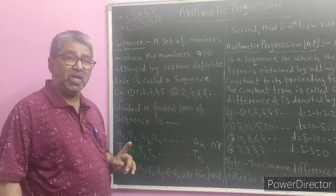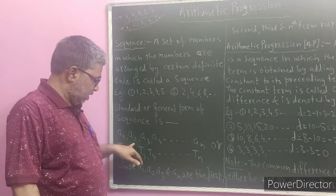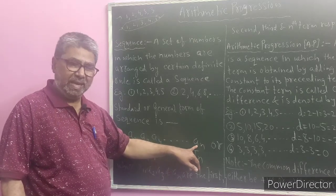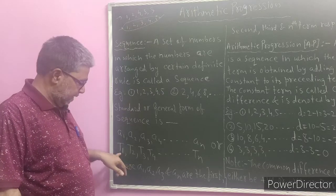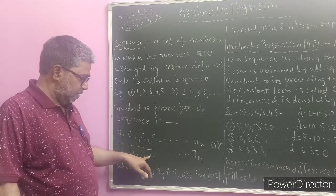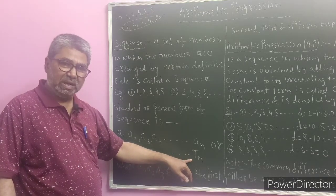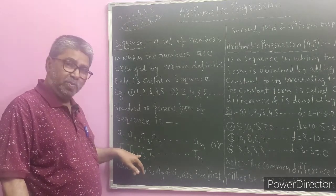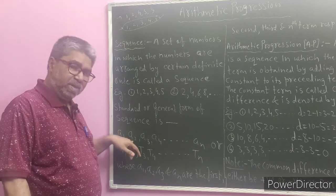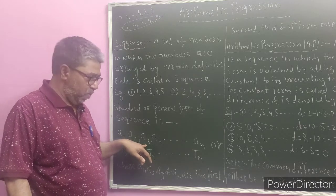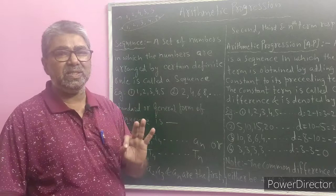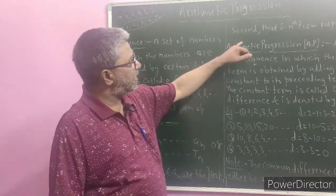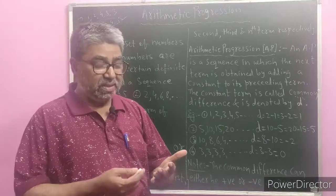The standard or general form of a sequence is given by a1, a2, a3, a4, a5, a6, and so on, where the last term is an. In other words, it can also be written as t1, t2, t3, t4, and so on, up to tn, where t stands for term. Here t1 or a1 is the first term of the sequence, a2 or t2 is the second term, a3 or t3 is the third term, whereas the nth term of the sequence is given by either an or tn, where a1, a2, a3, and an are the first, second, third, and nth terms of the sequence respectively.